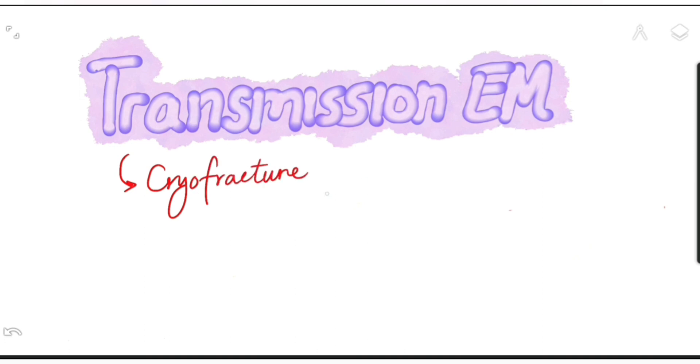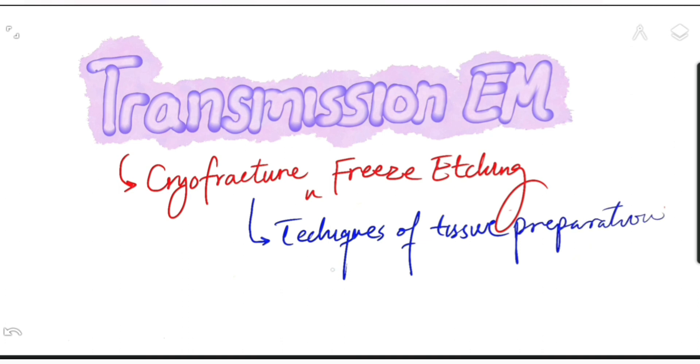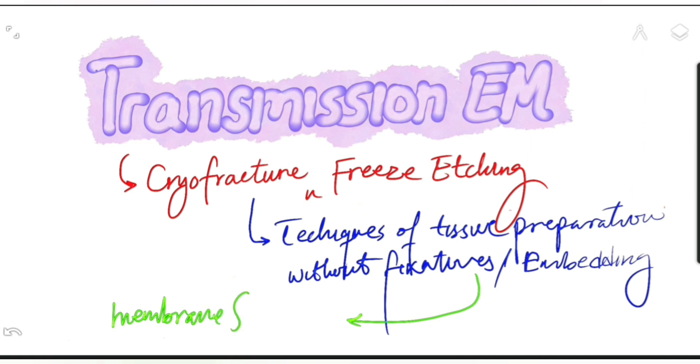We have cryofracture and freeze etching as two very useful techniques in preparation of the tissue for transmission electron microscopy. Through these techniques we don't use any fixatives and we don't do the embedding stage of preparation. Therefore, it is very useful in the membrane structures to be prepared and studied.